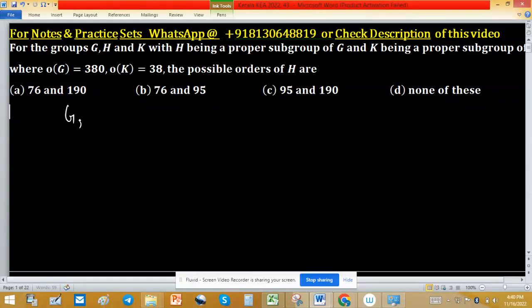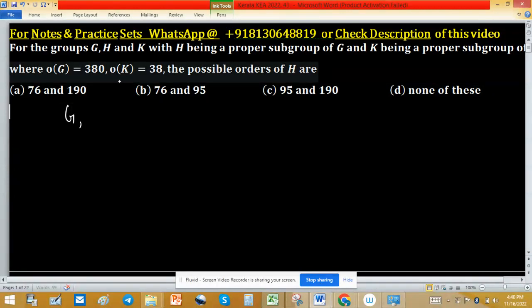For the group G, H and K, with H being a proper subgroup of G and K being a proper subgroup of H, where order of G equals 380, order of K equals 38, the possible orders of H are.